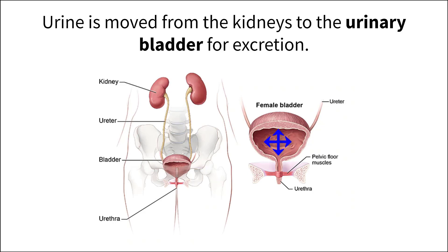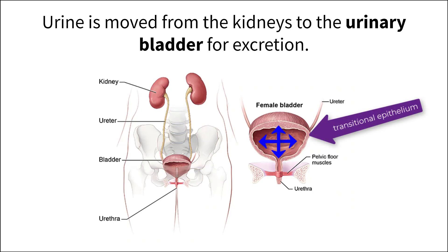Some of the surrounding tissue is made up of transitional epithelium. These cells, when pressure is applied to them, shift in such a way that allows the tissue to stretch and retain a high pressure within the bladder.